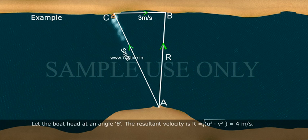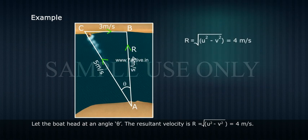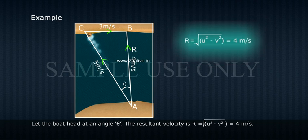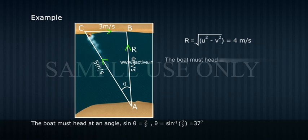Let the boat head at an angle theta. The resultant velocity R equals square root of u squared minus v squared equals 4 m per second. The boat must head at an angle sin theta equals 3 by 5.